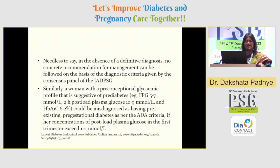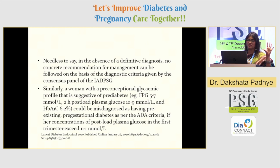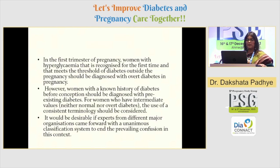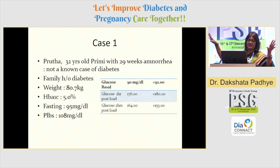Pre-conceptional glycemic profile — pre-conceptional pre-diabetes and diabetes has to be diagnosed early, because many of these guidelines still don't recommend doing OGTT in the first trimester. That is the crux of everything. So the key question is: does this patient present as a gestational diabetic or diabetes in pregnancy? Let's see whether this patient comes as a gestational diabetic or diabetes in pregnancy.